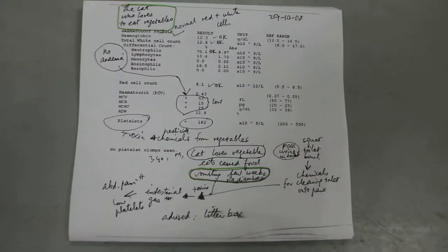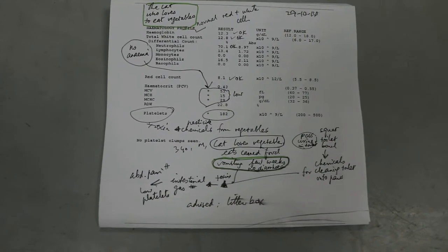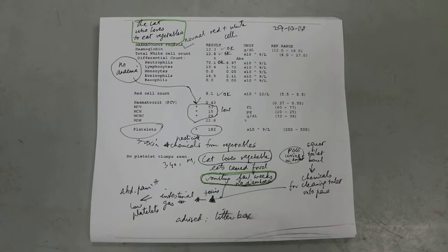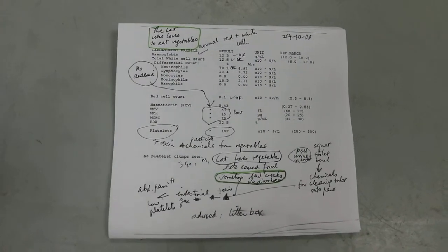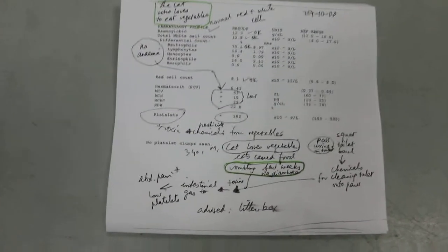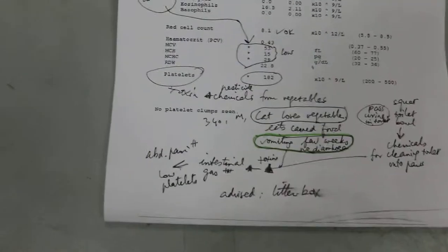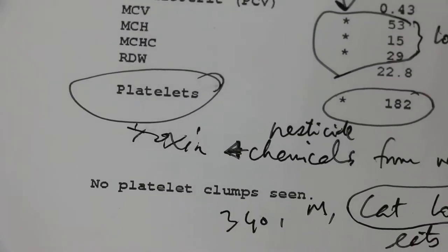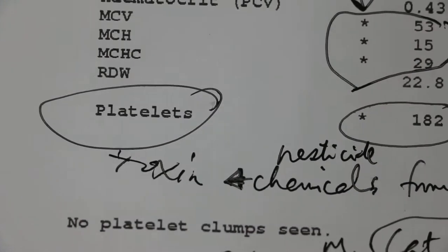From these results and from examination, this cat probably suffered from toxins. The toxins resulted in the low platelet count. Now what toxins would this cat get?